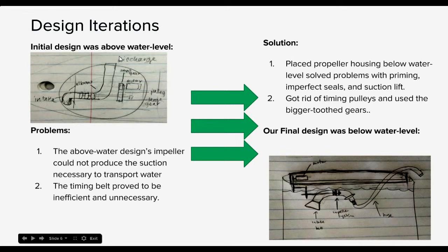And so this was all above water. The only part in the water is the intake tube, which had a bell piece at the end to help with suction. And the problems with this design is it could not produce the necessary suction to transport water. And the timing belt proved inefficient and unnecessary because there was slippage. We tried this design multiple times and nothing was working.